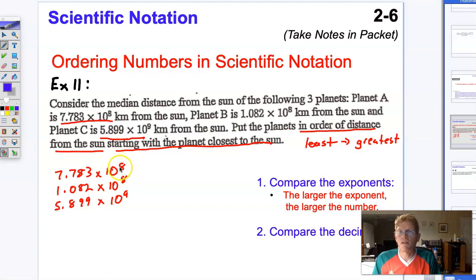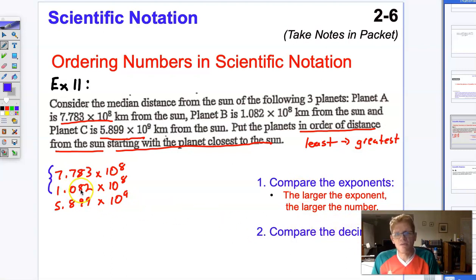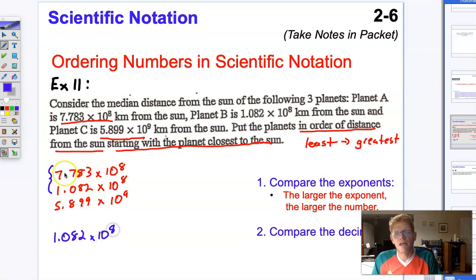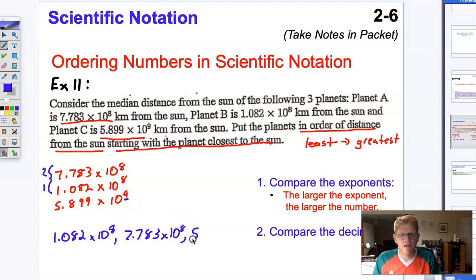The smallest numbers are going to be the ones that have the smallest exponents. We've got a tie here for smallest — both of these are 10 to the 8th power. So then we'll compare the decimals. 1.082 is clearly the smallest, so our answer would be 1.082 times 10 to the 8th first, then 7.783 times 10 to the 8th, and then our number with the largest exponent comes last: 5.899 times 10 to the 9th.